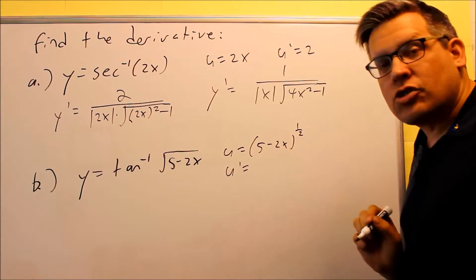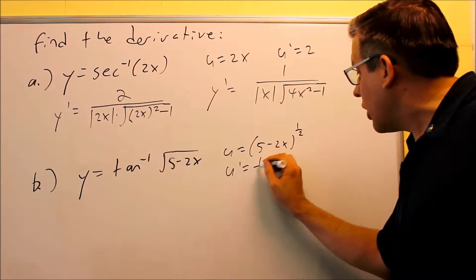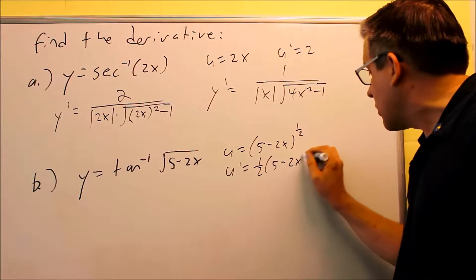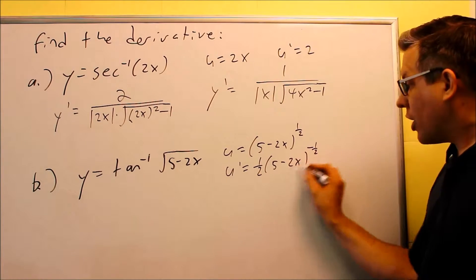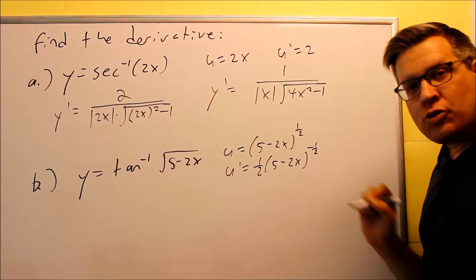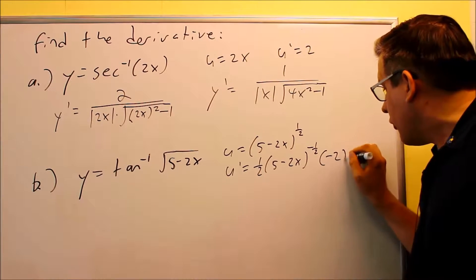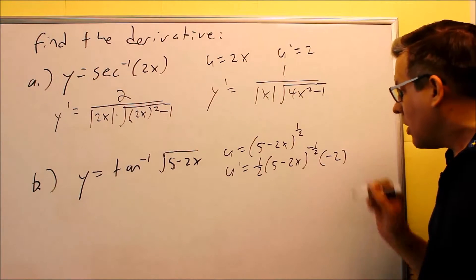For u-prime, we have to do chain rule. Do the outside one, 1 half comes down, 5 minus 2x. Subtract 1 from the exponent, I'll get negative 1 half, but don't forget to multiply by the derivative of the inside. The derivative of negative 2x is negative 2.